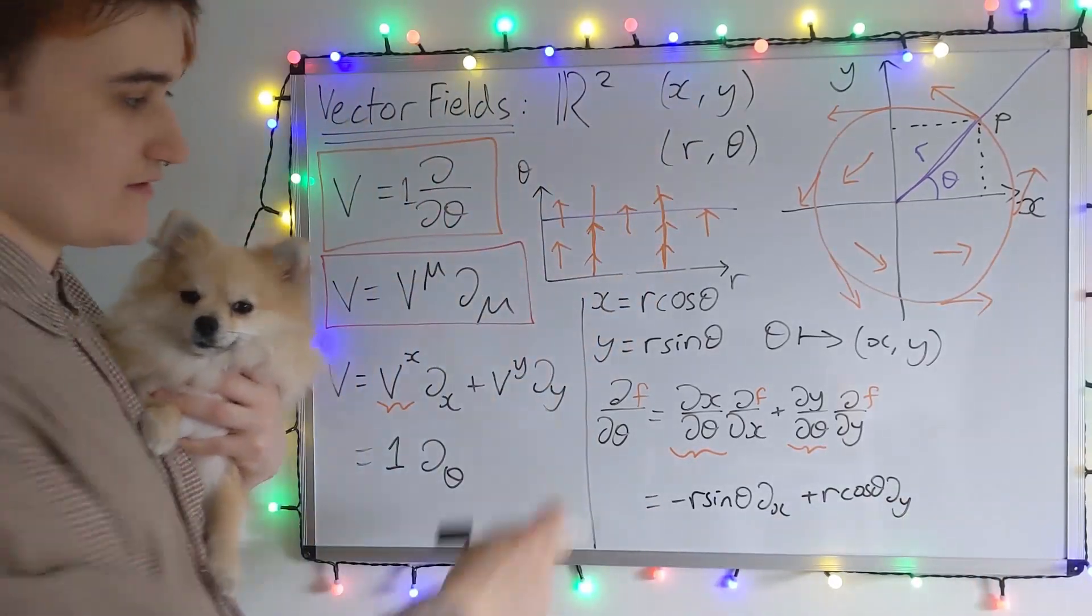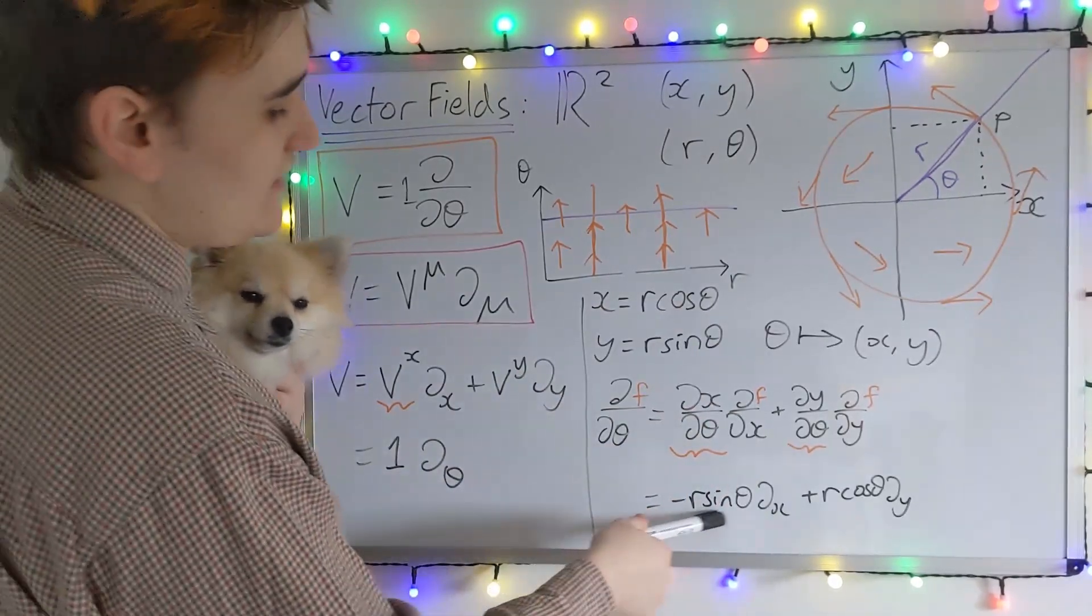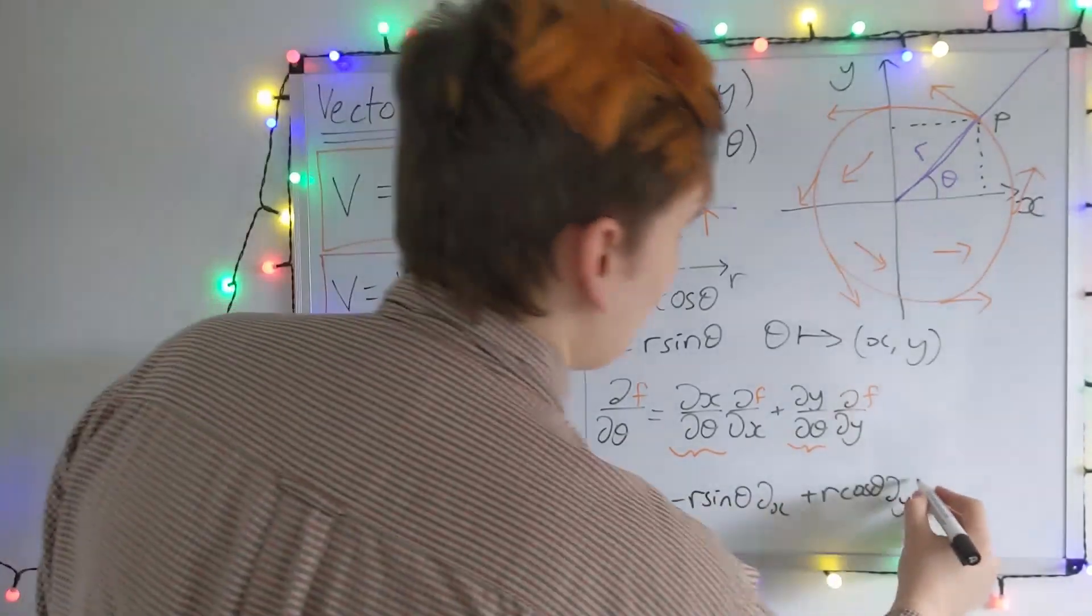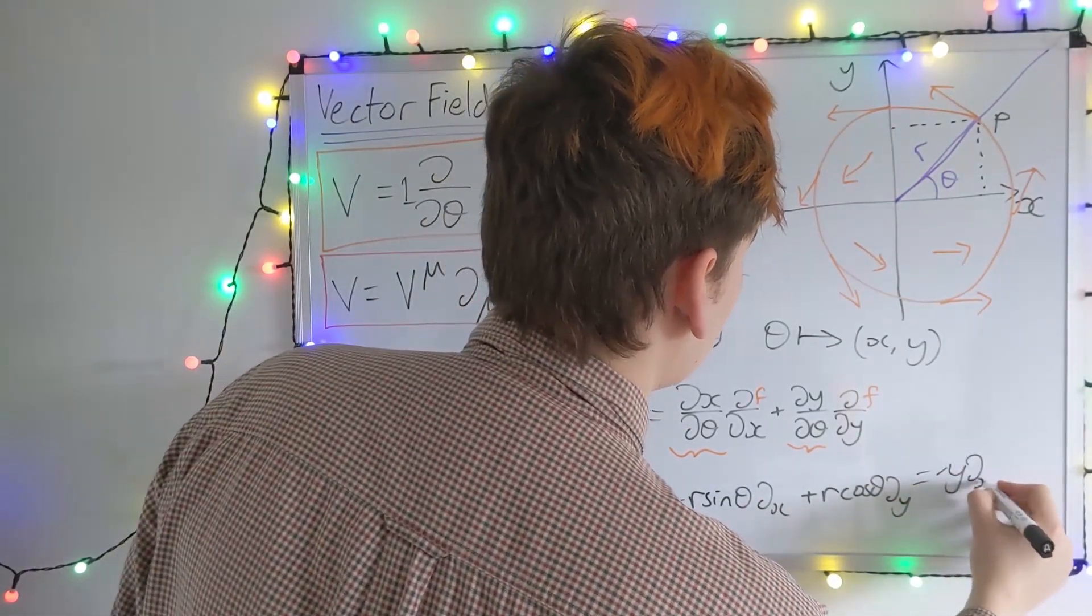Okay, so that was just taking the derivative of X with respect to theta and substituting here. And now I realize that R sin θ is Y, R cos θ is X, and I get the final expression: minus Y DX plus X DY.